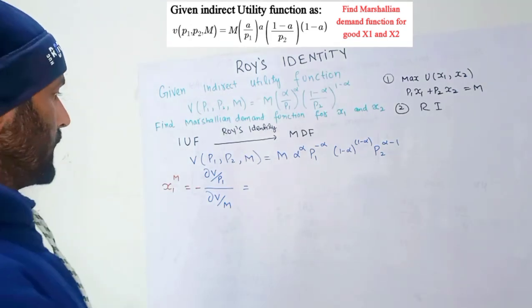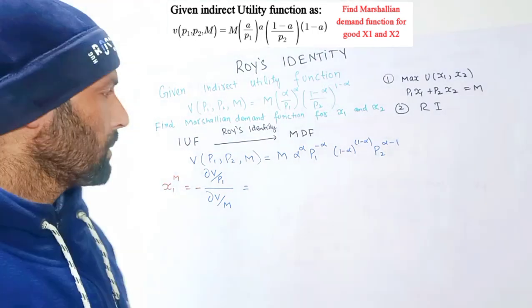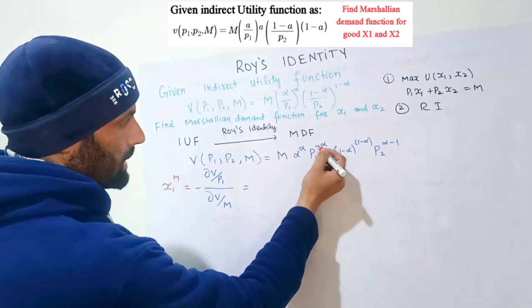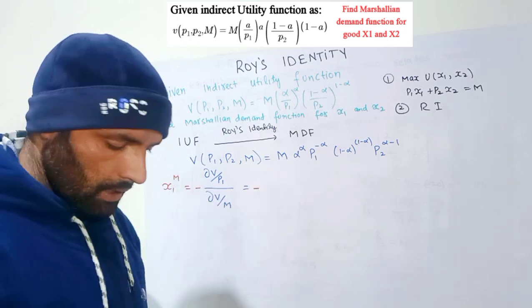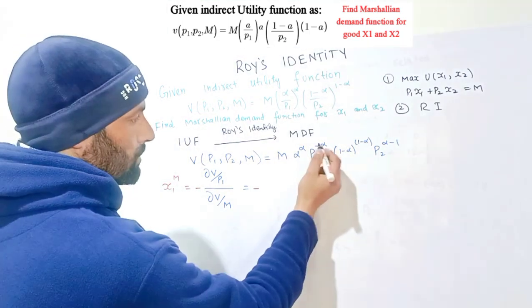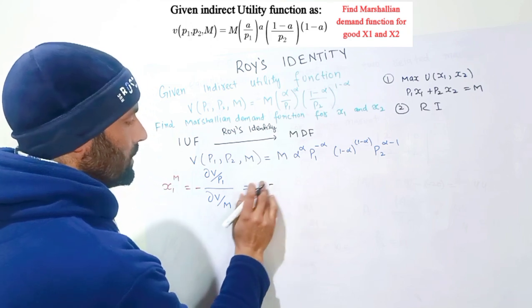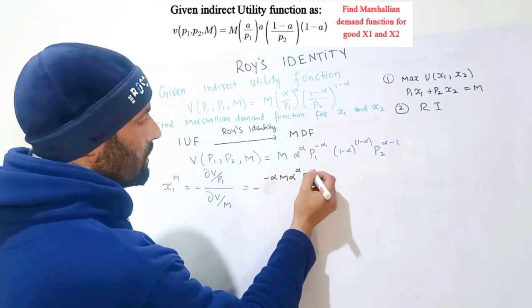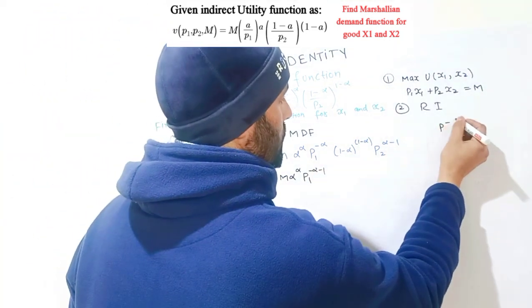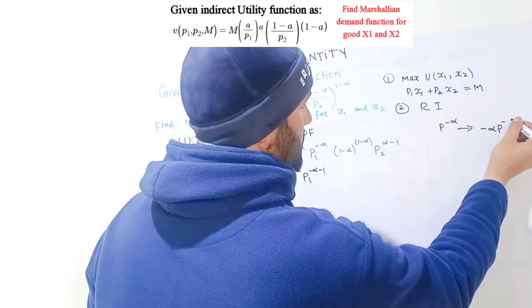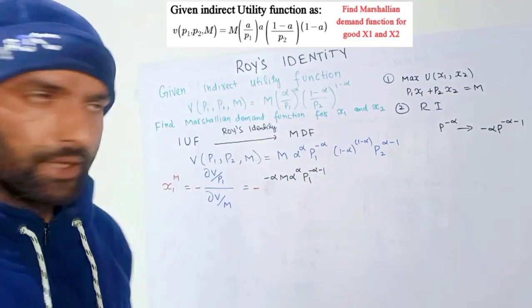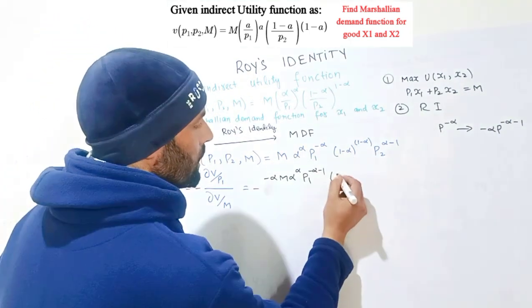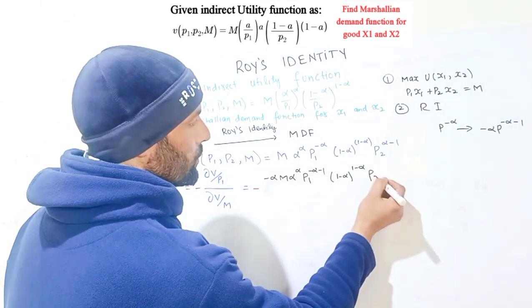Computing ∂V/∂p1: since p1 appears as p1^(-alpha), by the power function rule its derivative is -alpha * p1^(-alpha-1). So ∂V/∂p1 = -alpha * m * alpha^alpha * p1^(-alpha-1) * (1-alpha)^(1-alpha) * p2^(alpha-1), where all other terms with respect to p1 remain unchanged.